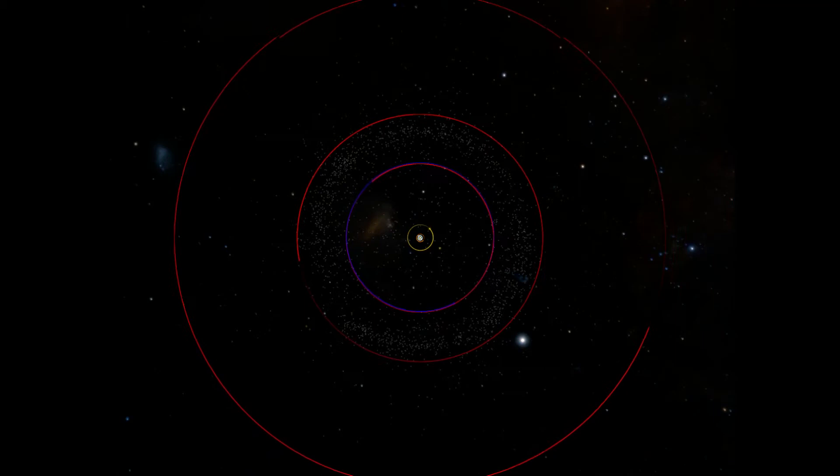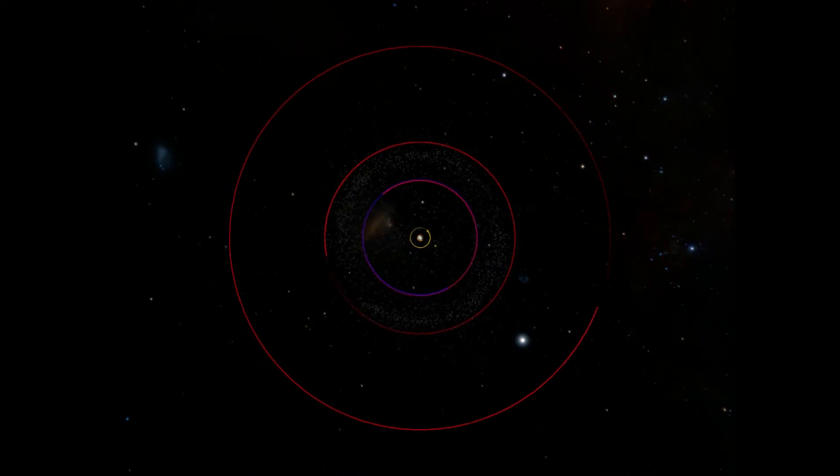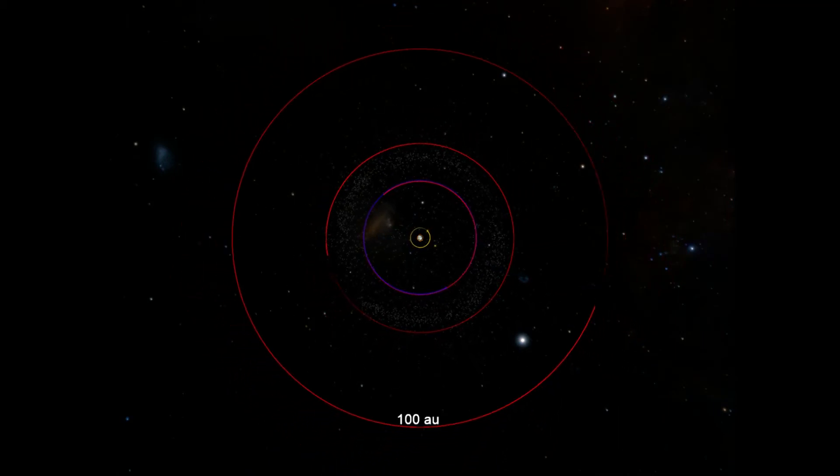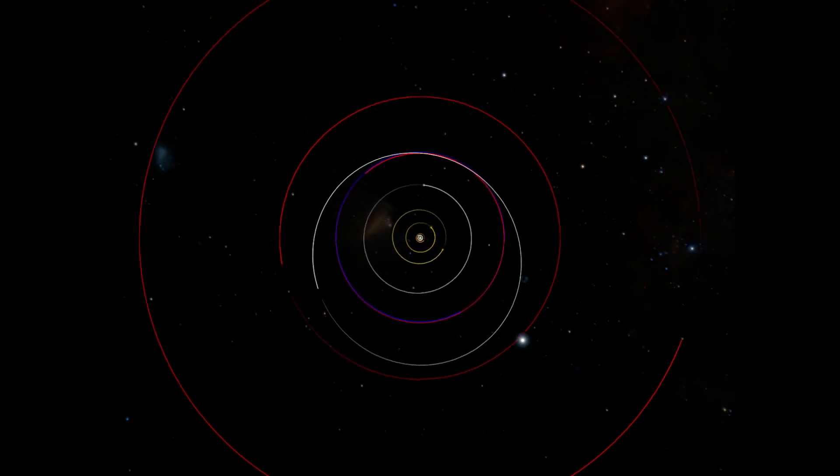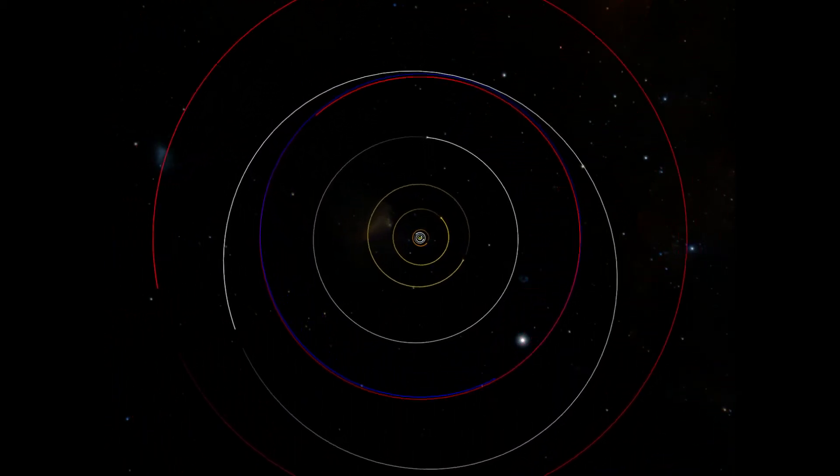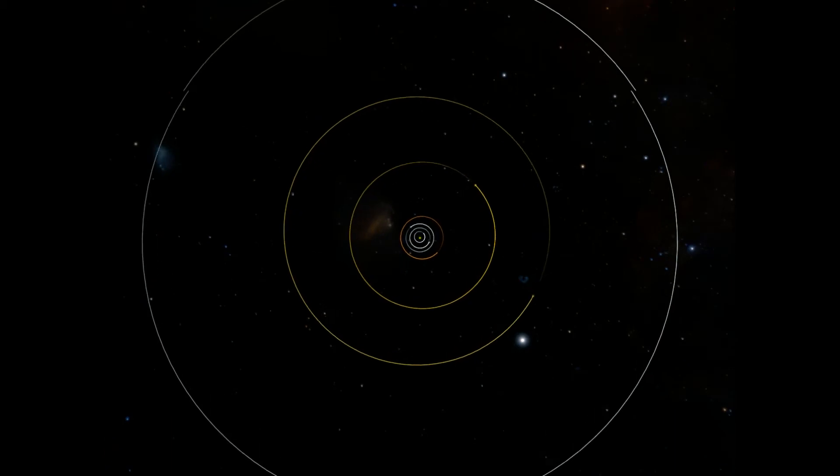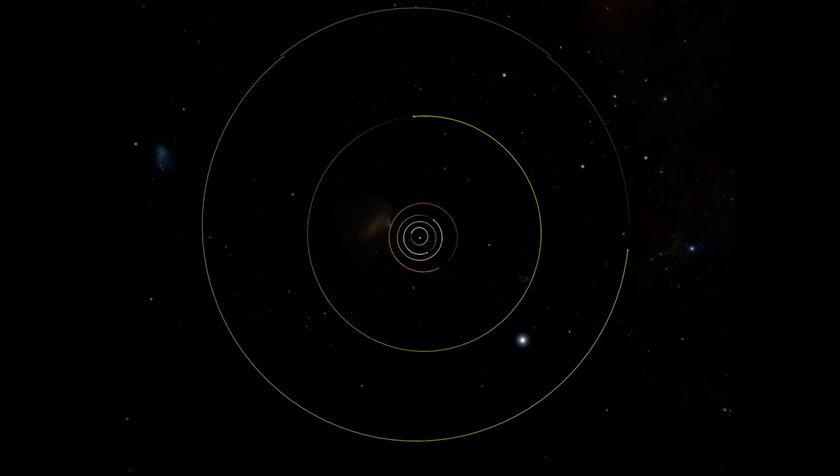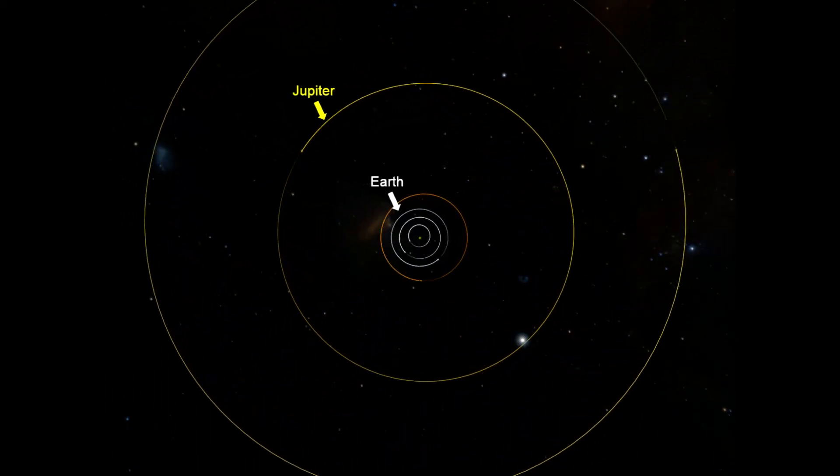But a second region, called a scattered disk, spans out nearly 100 AU. Many of the periodic comets in our solar system originated here in the Kuiper Belt.